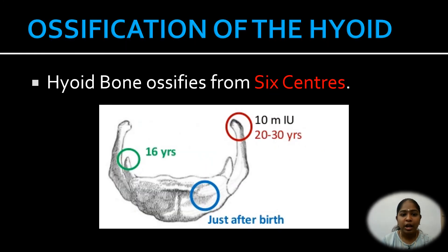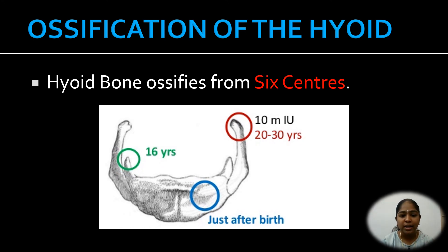Ossification of the hyoid bone: the hyoid bone ossifies from six centers. One center for each greater cornua develops at the end of fetal life. Two centers for the body develop at the time of birth. And the other two centers for the lesser cornua develop at the age of puberty.